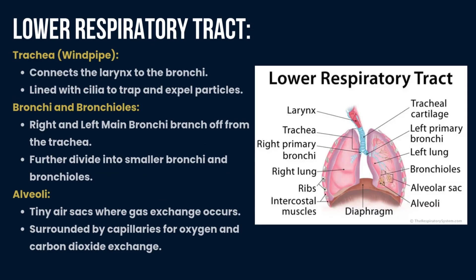Now we move into the lower respiratory tract. The first part is the trachea, or windpipe, which connects the larynx to the bronchi. It is lined with cilia to trap and expel particles. The second part is the bronchi and bronchioles — the right and left main bronchi branch off from the trachea and are further divided into smaller bronchi and bronchioles.